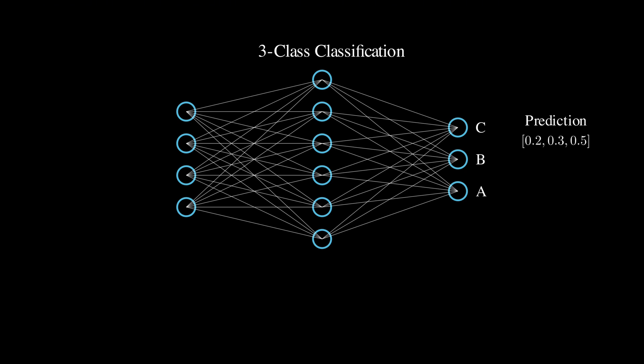meaning it thinks there is a 20% chance it's class A, 30% for B, and 50% for C. If the true label is [0,0,1] or class C, how do we measure how wrong our prediction is?